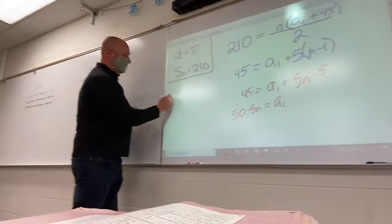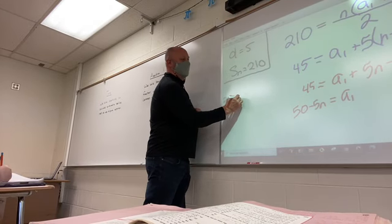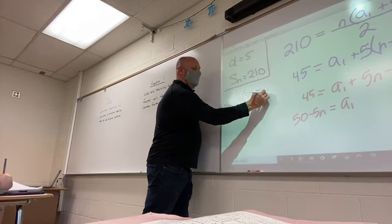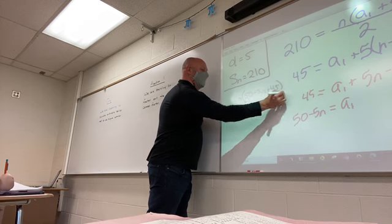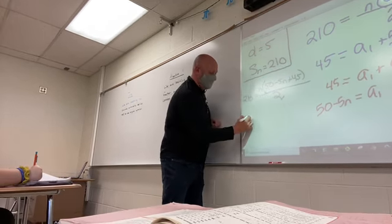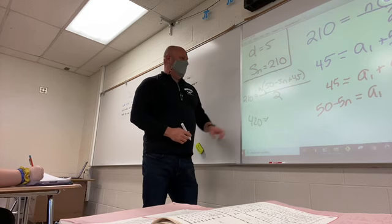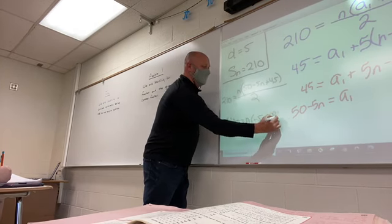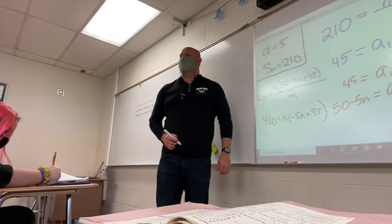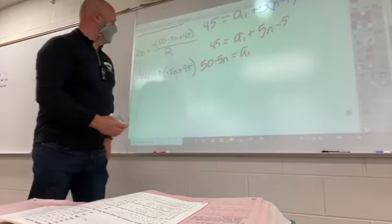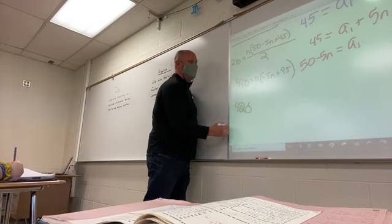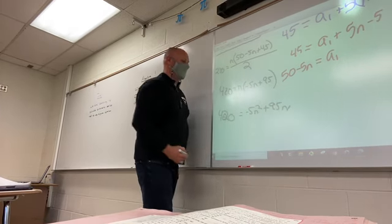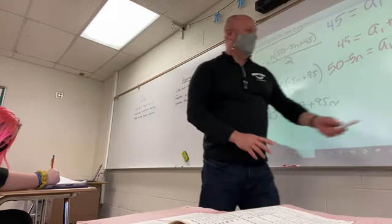So 210 would equal the N, which we don't know, times A sub 1, which is now 50 minus 5N plus 45 divided by 2. Now I can butterfly, right? So that makes that 420. I can simplify this into negative 5N plus 95. Distribute. So I'm going to get 420 equals negative 5N squared plus 95N. Now I've got a quadratic. So how do we solve quadratics? We get everything on one side, right?